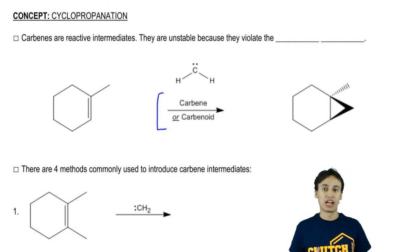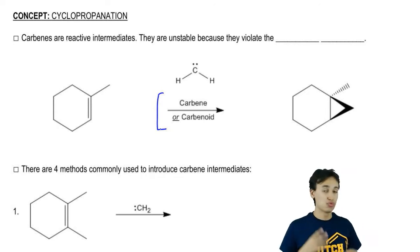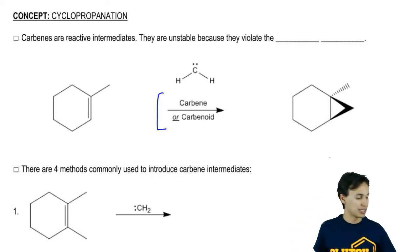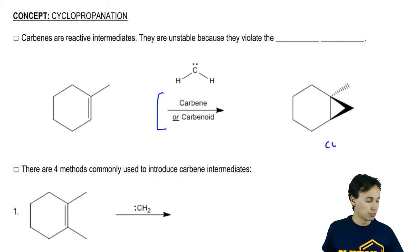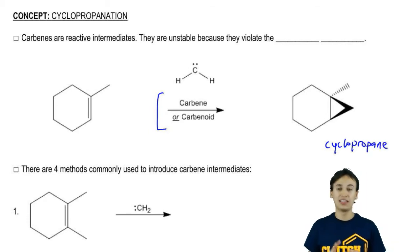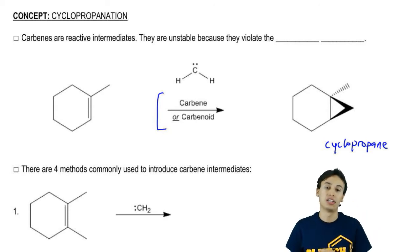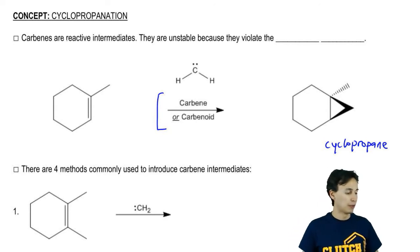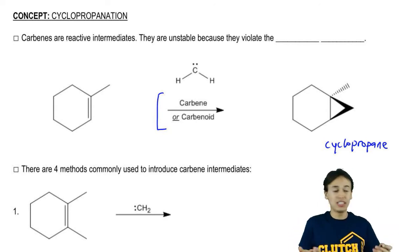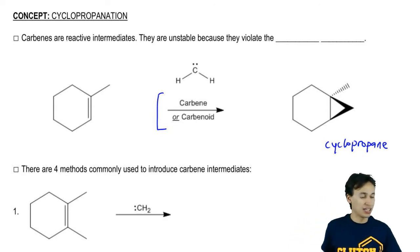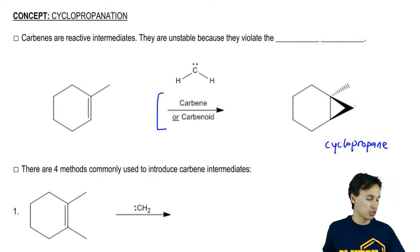The product from this reaction is really just a cyclopropane. We literally get the addition of an alkyl group on that double bond, and all you're really getting is a methylene group, or a CH2.